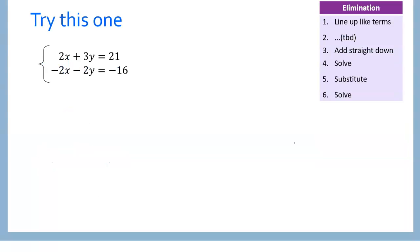Let's look at an example. Our first step is to line up like terms — we have x and x, y and y, number and number. That looks good. We don't have a step 2 right now. Then we add straight down: 2x plus negative 2x, that's going to be zero — those cancel. 3y minus 2y: 3 minus 2 is just 1, so we just get y. 21 minus 16 will be 5.